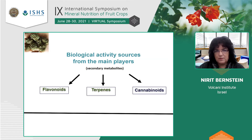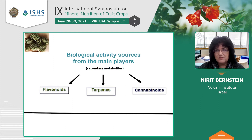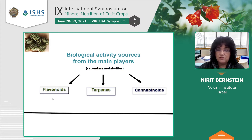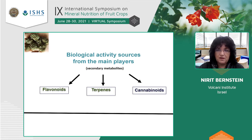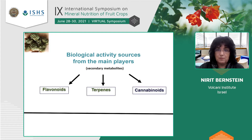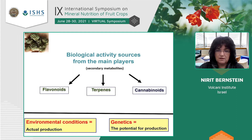The power of cannabis really sources from the biological activity of its components, which are secondary metabolites. Specifically, the main compounds are either cannabinoids — which are almost specific to cannabis — and terpenes and flavonoids, which are found in many other plants. Some people call cannabis the plant of the 1,000 molecules, because there are nearly 1,000 molecules or more that have biological therapeutic activity.